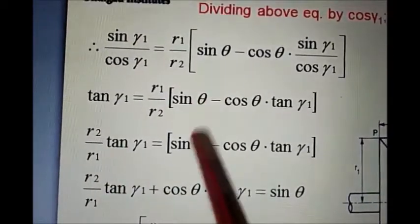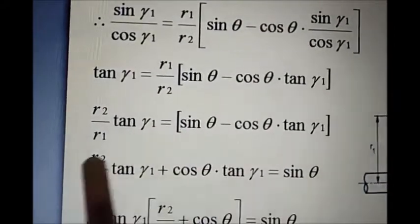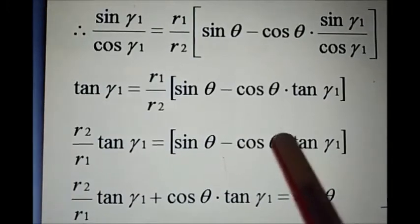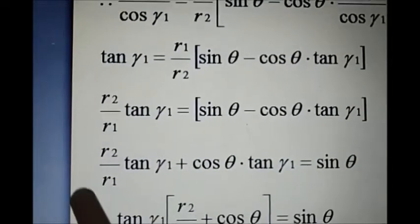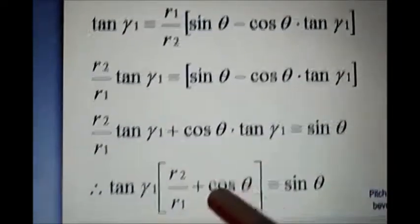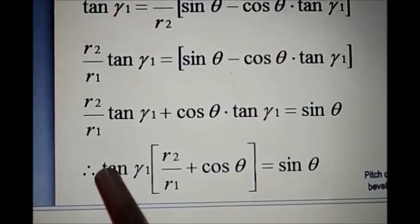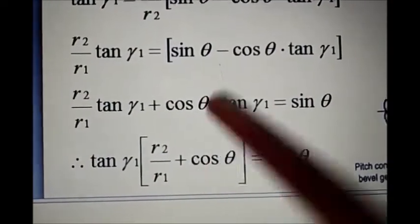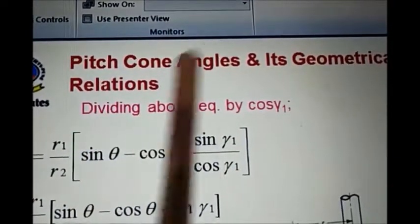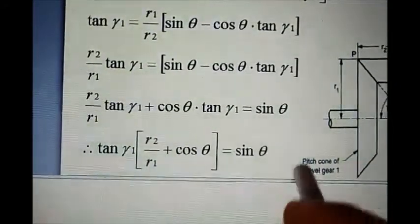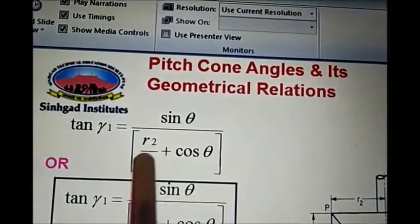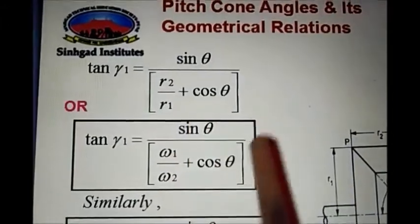Rearranging: moving the R1 over R2 to the other side gives R2 over R1 times tan(gamma 1). We then take tan(gamma 1) common from both terms: tan(gamma 1) times (R2 over R1 plus cos theta) equals sine theta. Therefore, tan(gamma 1) equals sine theta divided by (R2 over R1 plus cos theta).